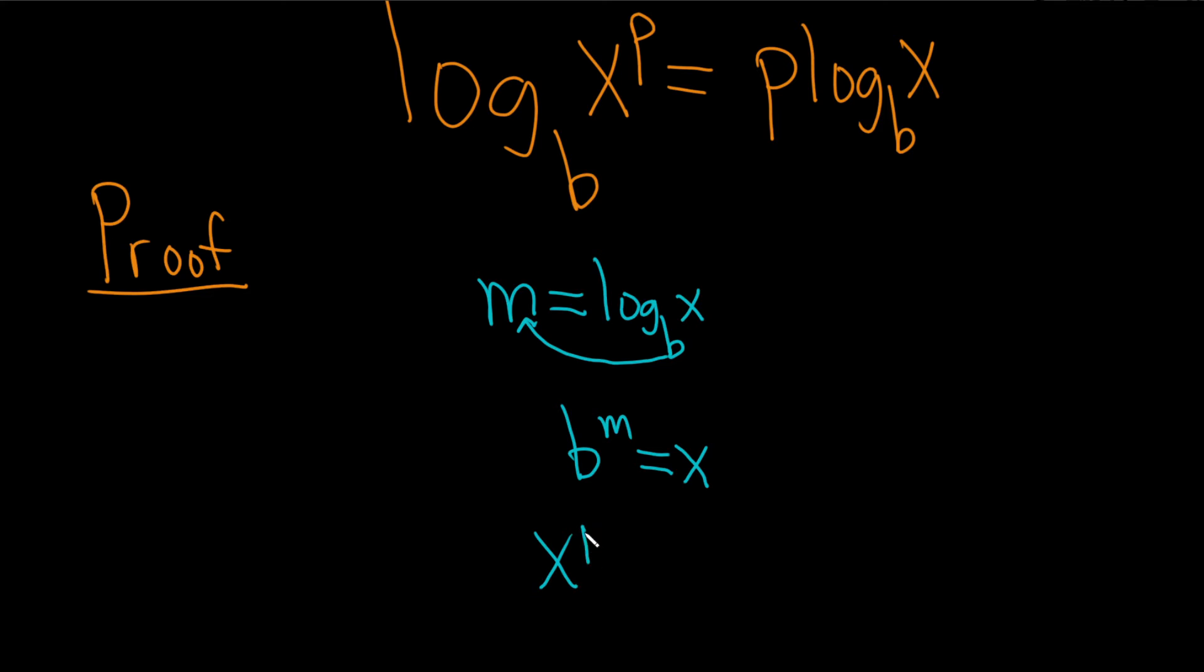So x to the p is really b to the m to the p. So this is really b to the mp. Alright, properties of exponents.